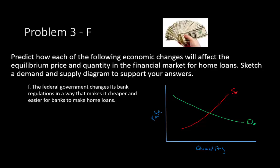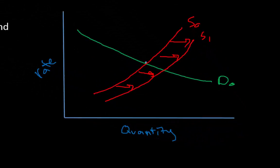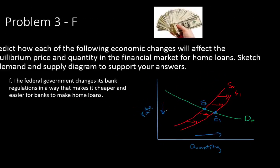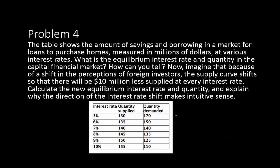Problem 3f: the federal government changes bank regulations in a way that makes it cheaper and easier for banks to make home loans. Banks are able to supply more loans, so supply increases and shifts right to S1. The original equilibrium shifts right and downward — quantity increases but the rate decreases.